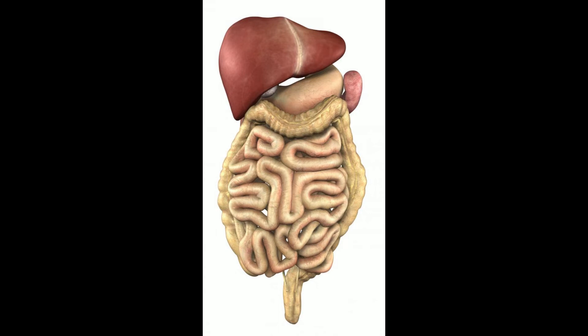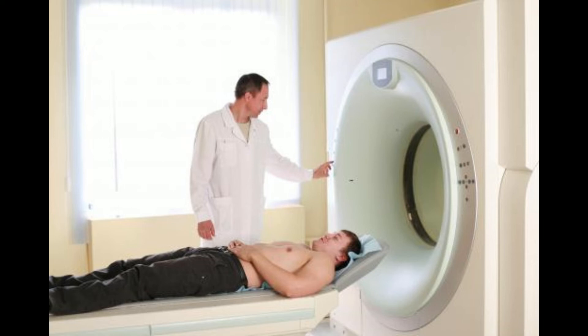The liver helps the body filter out poisons and toxins. Heavy alcohol and drug use can damage the liver when removing toxic substances, and the damage can lead to fatty liver disease. This disease does not usually present signs or symptoms. However, when it does, you may feel fatigued or have abdominal pain on the right side. Obesity and a diet high in fats can increase the risk of developing non-alcoholic fatty liver disease.